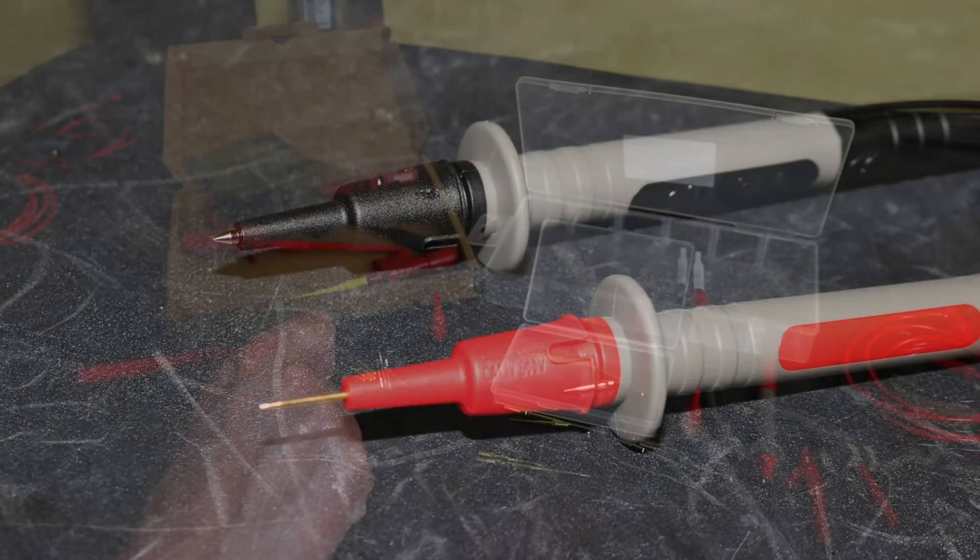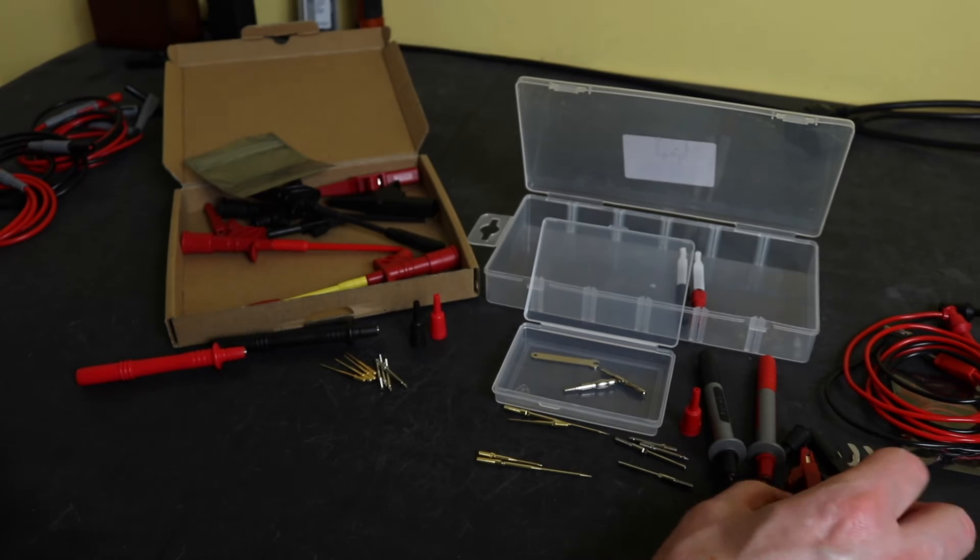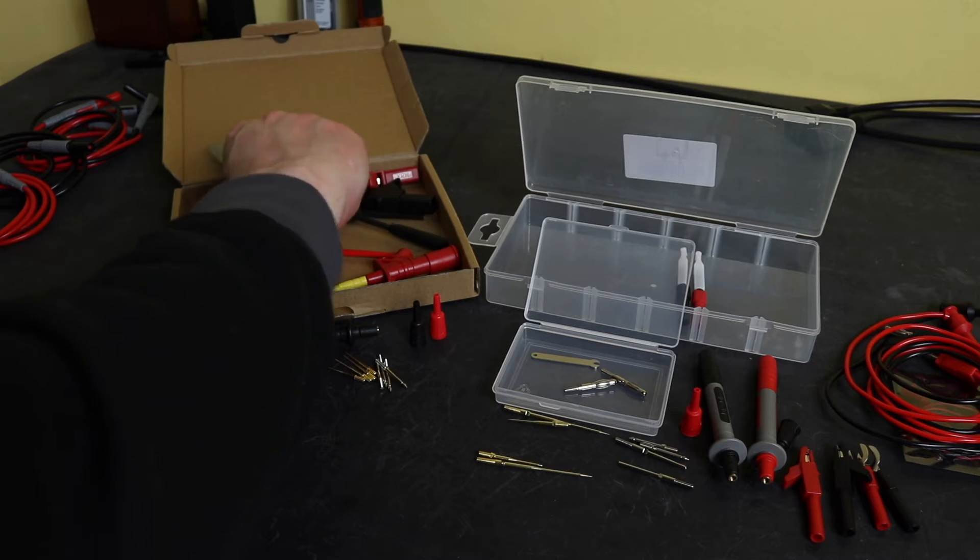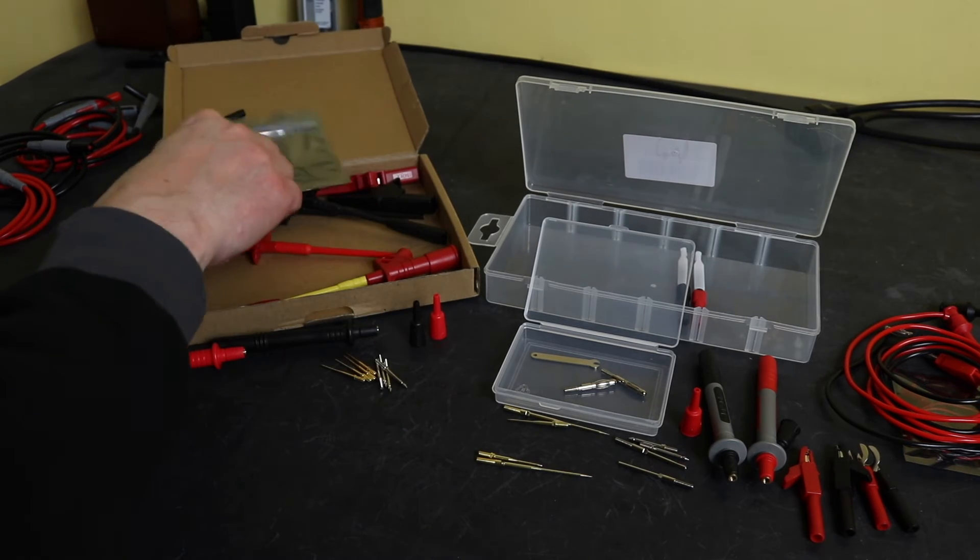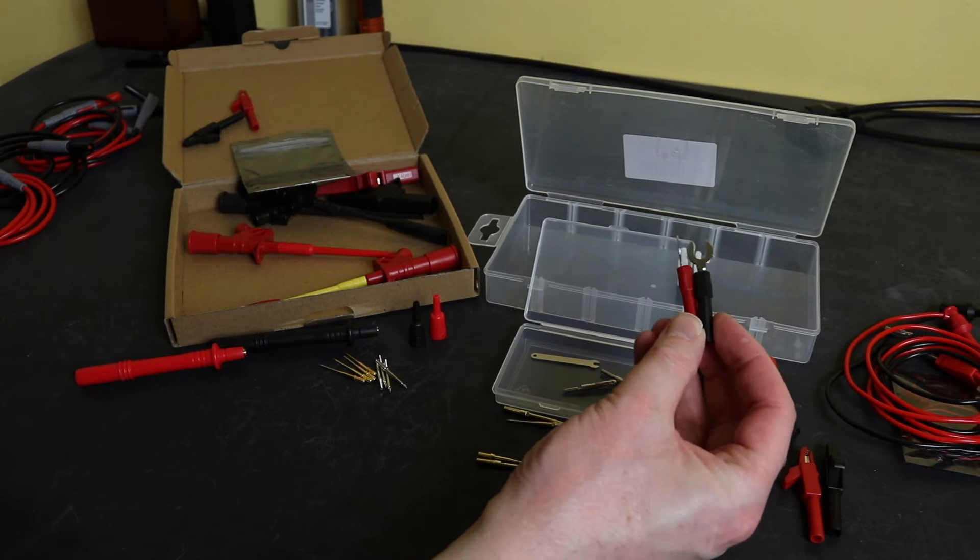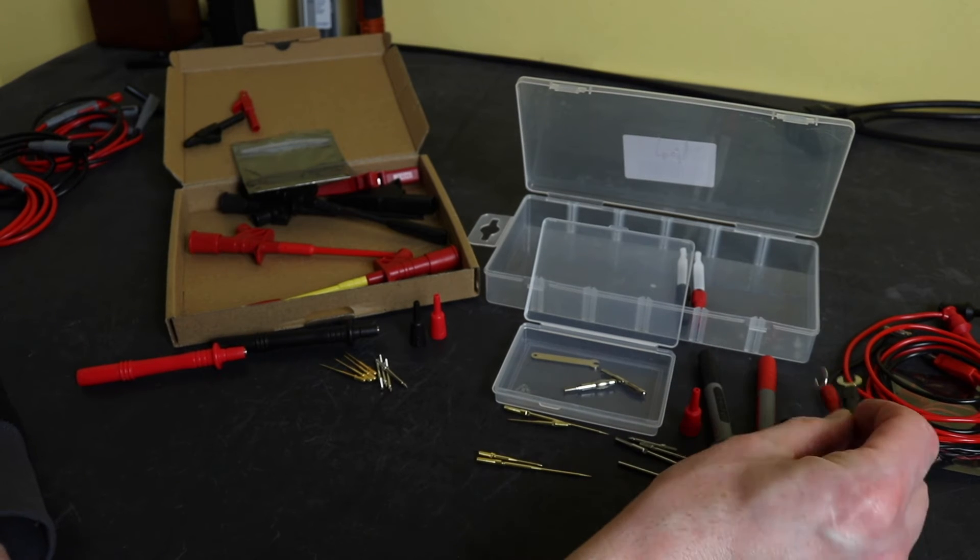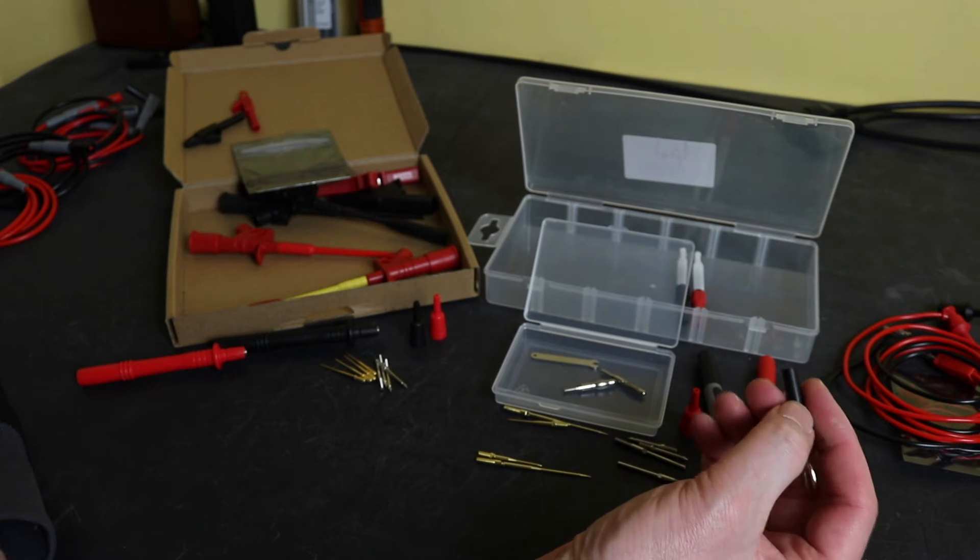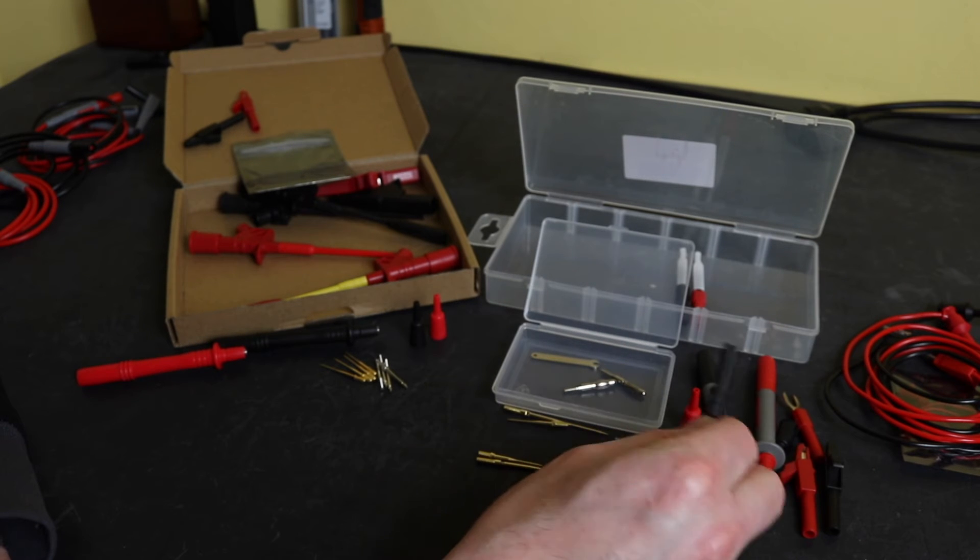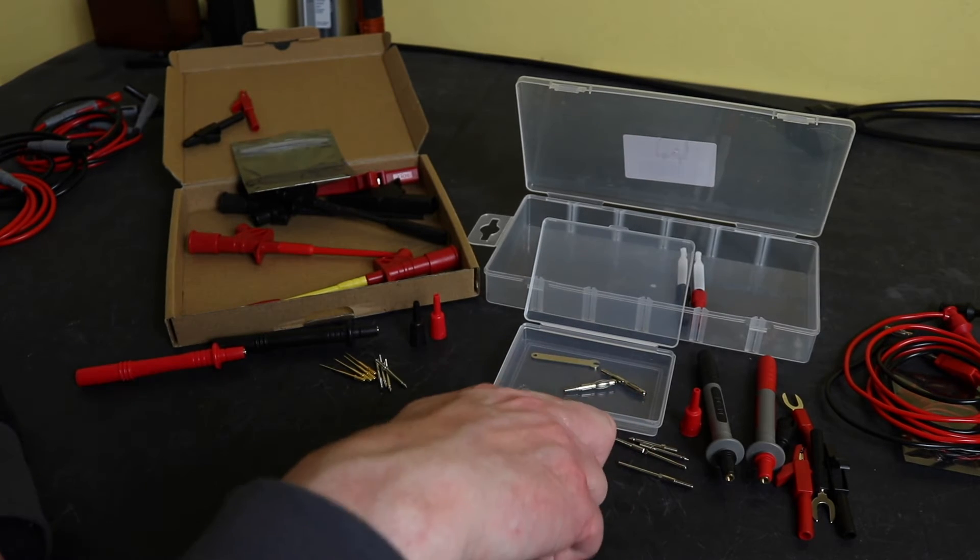In this little box for the set from Clique you get these small crocodile clips. You also get small crocodile clips in the set from Prostor as well, exactly the same. You get a set of spade connectors for use with the set from Clique. You don't get spade connectors with the set from Prostor. These spade connectors are standard four millimeter accessories, same as the croc clips, so they will plug directly into the leads.